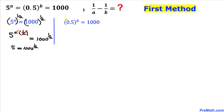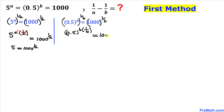Now let's focus on the second equation: 0.5 to the power b equals 1000. Let's take a power of 1 over b on both sides and apply the power rule of exponents. The nested exponents become 0.5 to the power b times 1 over b, and the right hand side remains 1000 to the power 1 over b. Since b and 1 over b cancel out, we get 0.5 equals 1000 to the power 1 over b.